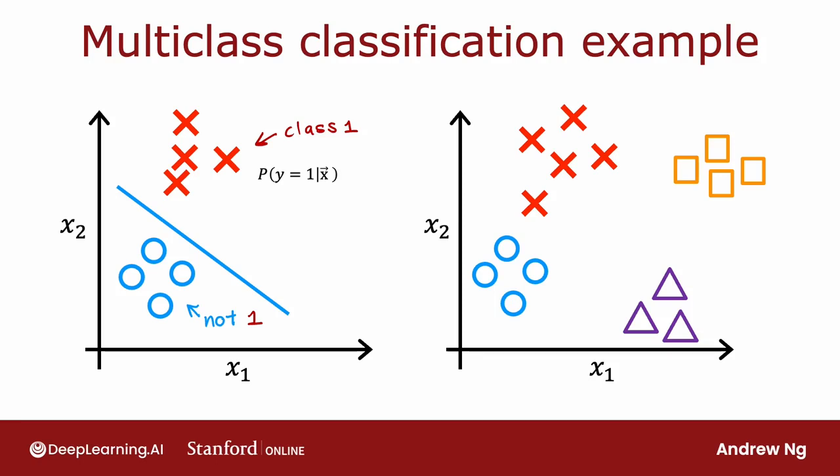And instead of just estimating the chance of y being equal to 1, we'll now want to estimate what's the chance of y is equal to 1, or what's the chance of y is equal to 2, or what's the chance of y is equal to 3, or the chance of y being equal to 4.